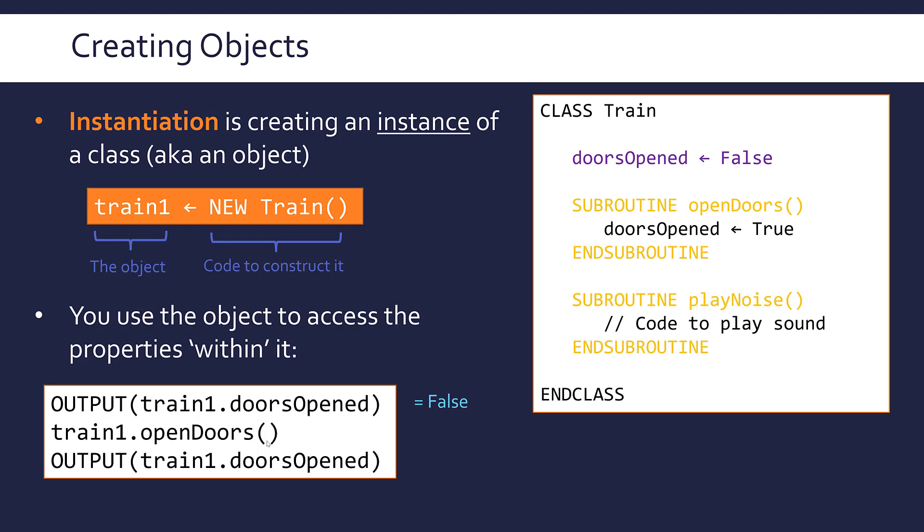If I then call openDoors on train1, because it's a method, you've got to do it on the object. It can't just be openDoors on its own. It's got to be applied to this object. That wouldn't do anything apart from behind the scenes, change doorsOpen to be true. Therefore, if I run the same bit of code again and just output this field, I get true this time. The key message is, once you've instantiated the object, to actually use it and get access to the code inside the class, I've got to apply the field name or the method name to the object name.